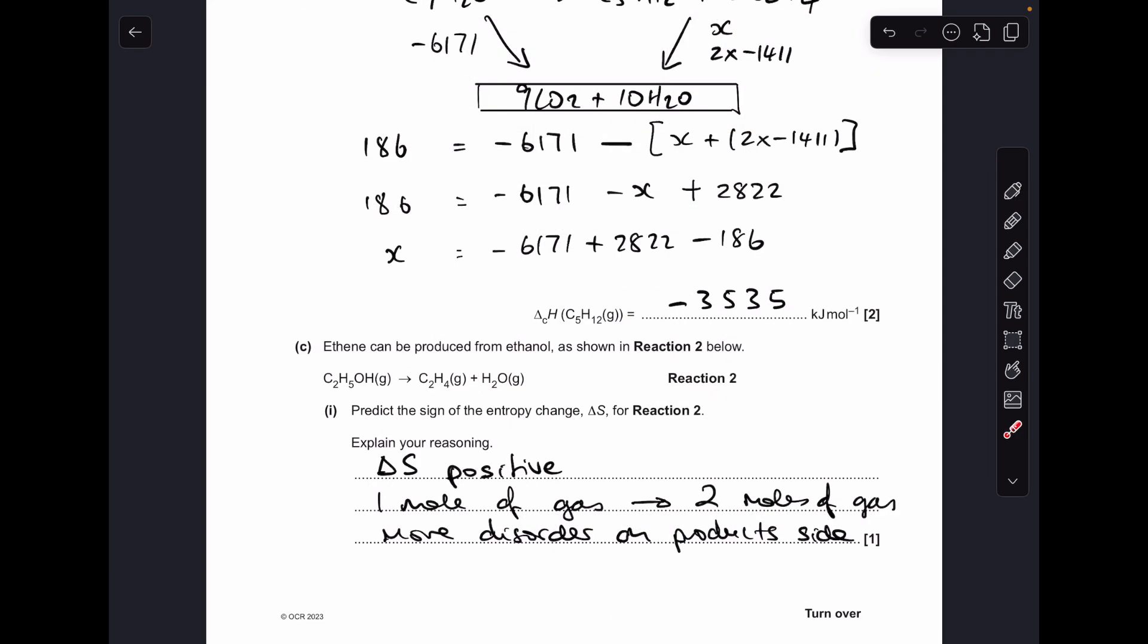Moving on to part C, I've already put the answer in there. So the delta S, the entropy change for reaction two, this one here, is positive. And that's because you're going from one mole of gas to two moles of gas. So there's obviously more disorder on the product side with these two moles of gas compared to this one.